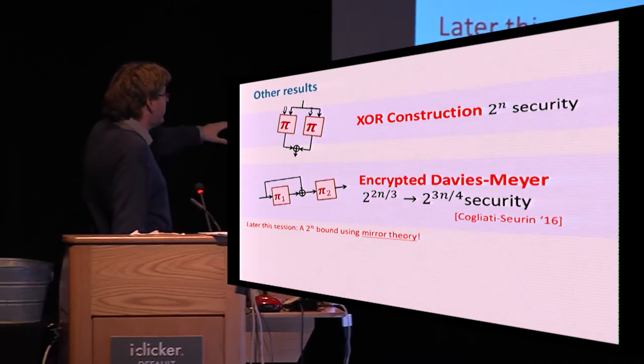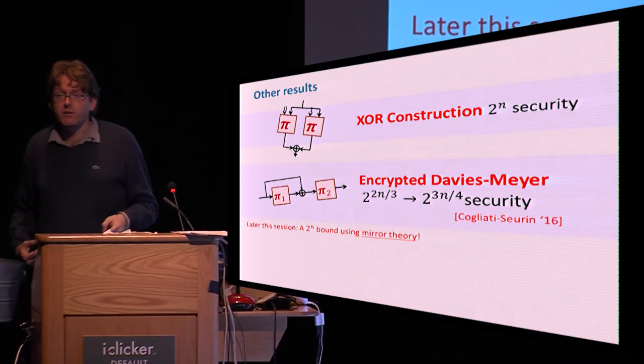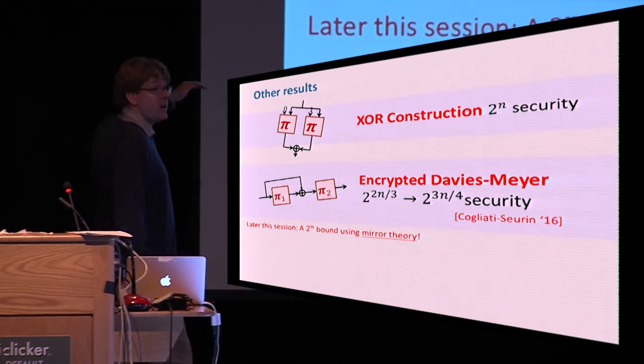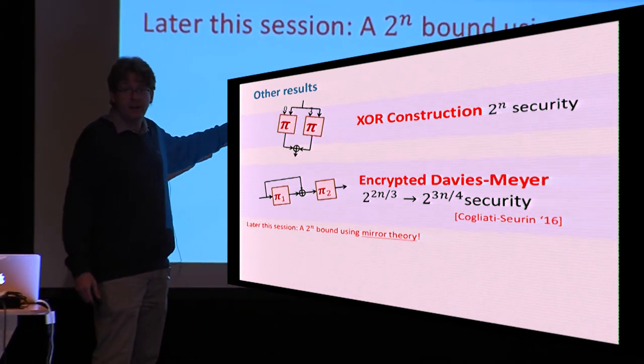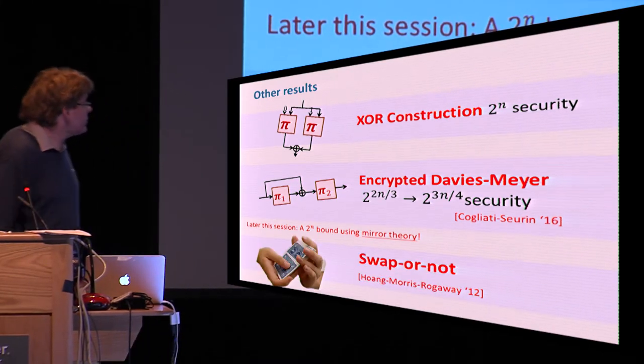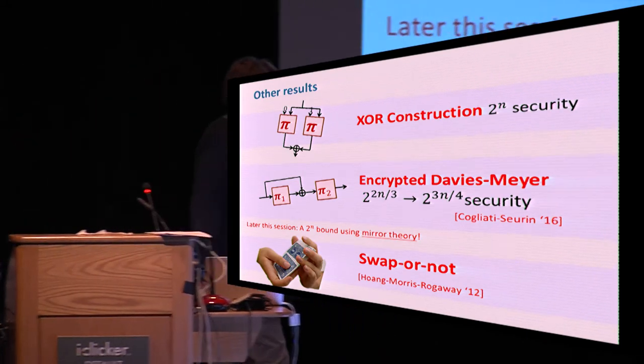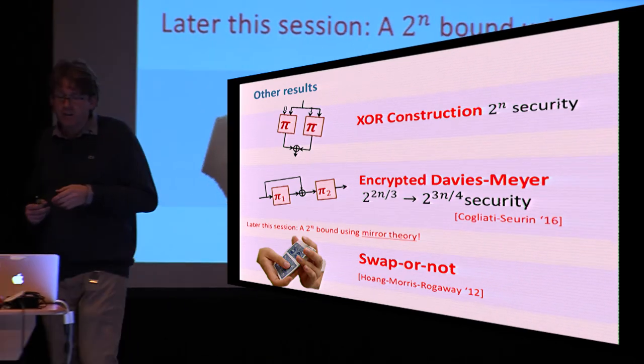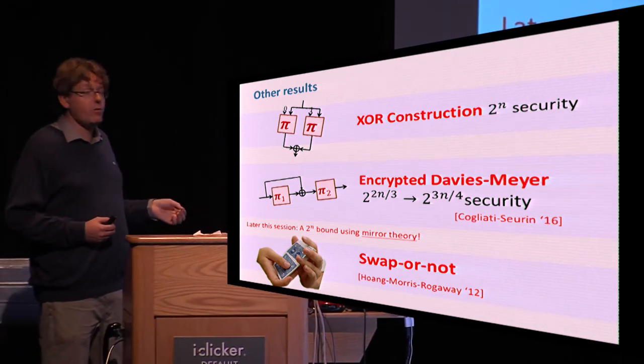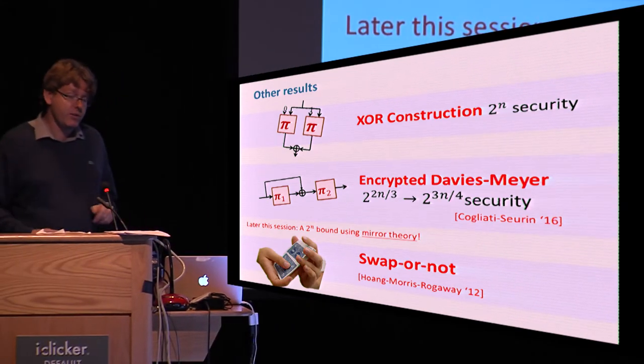I have to advertise that there's going to be a talk later in this session which is going to go back to mirror theory to show tighter bounds that imply security up to 2^n for the same construction. I also want to stress that it's not clear whether we can tighten our analysis using the chi-square method, and it's still open and we might be able to do so. It's an open problem. Finally, we also study the swap-or-not cipher, which is a construction that was proposed by Hoang, Morris, and Rogaway in the context of format-preserving encryption. Here the result is a bit harder to state compactly, but essentially using the chi-square method we prove better trade-offs between the number of rounds in the cipher and the achievable security level.